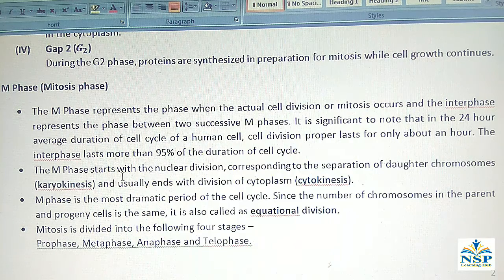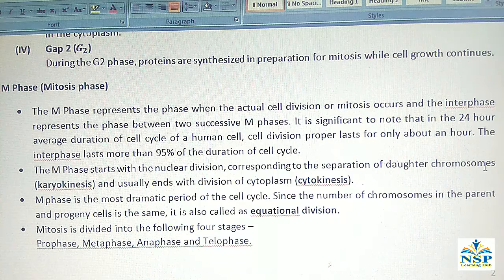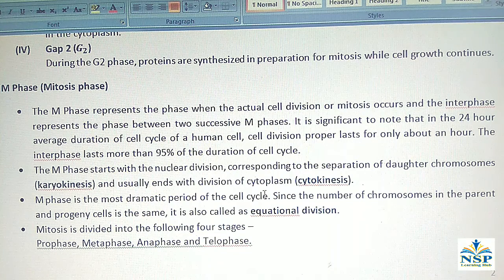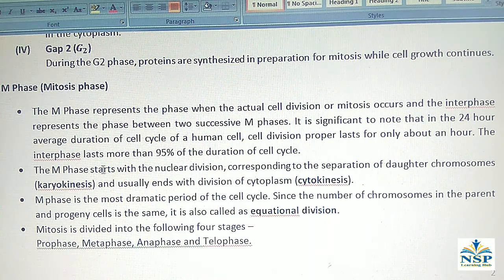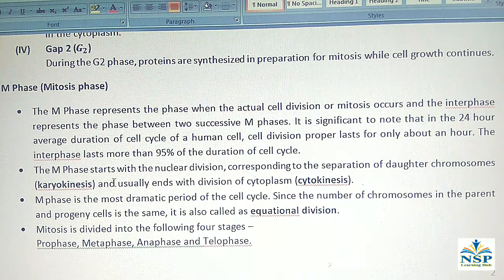The M-Phase starts with the nuclear division corresponding to the separation of daughter chromosomes, called karyokinesis, and usually ends with the division of cytoplasm, called cytokinesis. So in M-Phase, nuclear division is called karyokinesis and cytoplasm division is called cytokinesis.